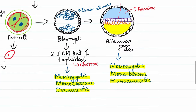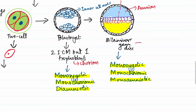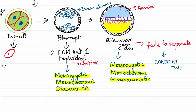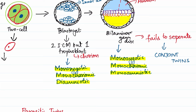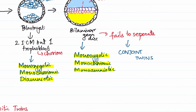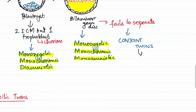Now, what is the issue with the last type — monozygotic monochorionic monoamniotic? If the bilaminar disc fails to separate in these twins, this will lead to conjoined twins. That is how conjoined twins are formed: failure of the bilaminar disc to separate between the two fetuses leads to the formation of conjoined twins.